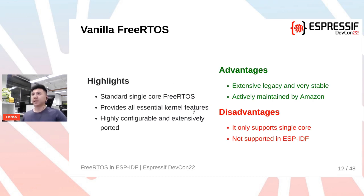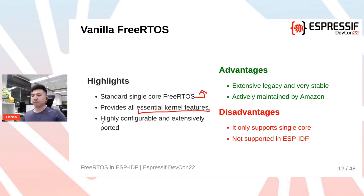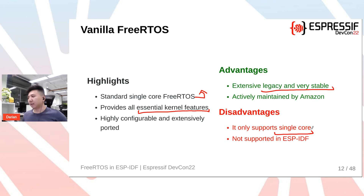Vanilla FreeRTOS is the standard single-core implementation with a long legacy. It provides essential kernel features: synchronization primitives, task scheduling, interrupts, critical sections, and is highly configurable via FreeRTOS config settings. Advantages: extensive legacy, stability, and active maintenance by Amazon. Disadvantages: it's single-core, so it can't natively support dual-core chips like the ESP32 or ESP32-S3. More importantly, vanilla FreeRTOS is not actually supported in ESP-IDF — even when building for a single-core ESP chip, it's running IDF-SMP, not vanilla.